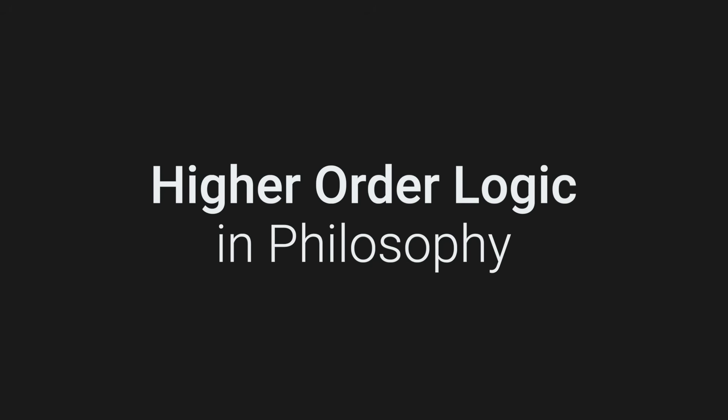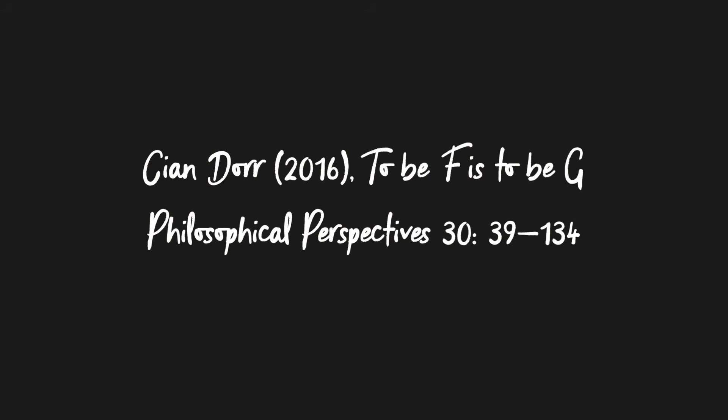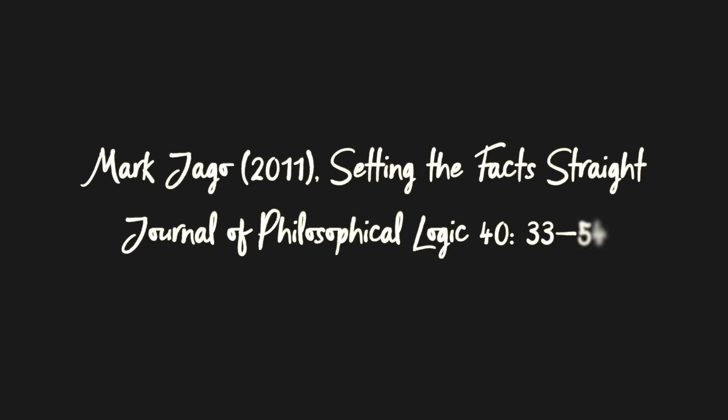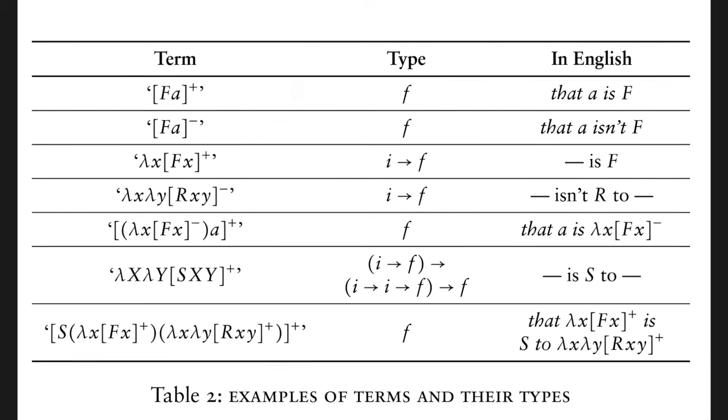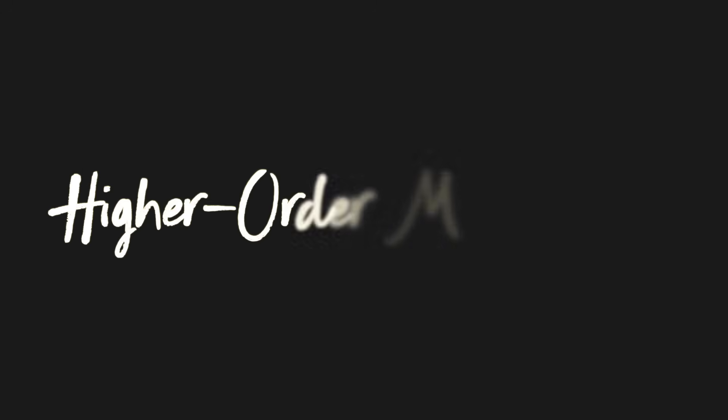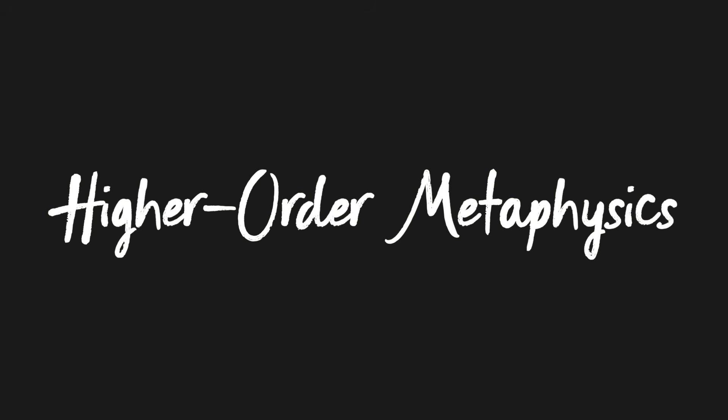In the last 10, 15 years or so, you've started seeing lambdas cropping up in philosophy papers. Kian Dorr had this very influential paper, to be an F is to be a G, that basically used type theory to analyse these kind of locutions. I wrote a paper back in 2011 or 12 about states of affairs that kind of used type theory. And basically there's been an explosion of people using type theory in metaphysics. So higher order metaphysics is the idea of basically using higher order logics, higher order quantification to address traditional metaphysical issues.